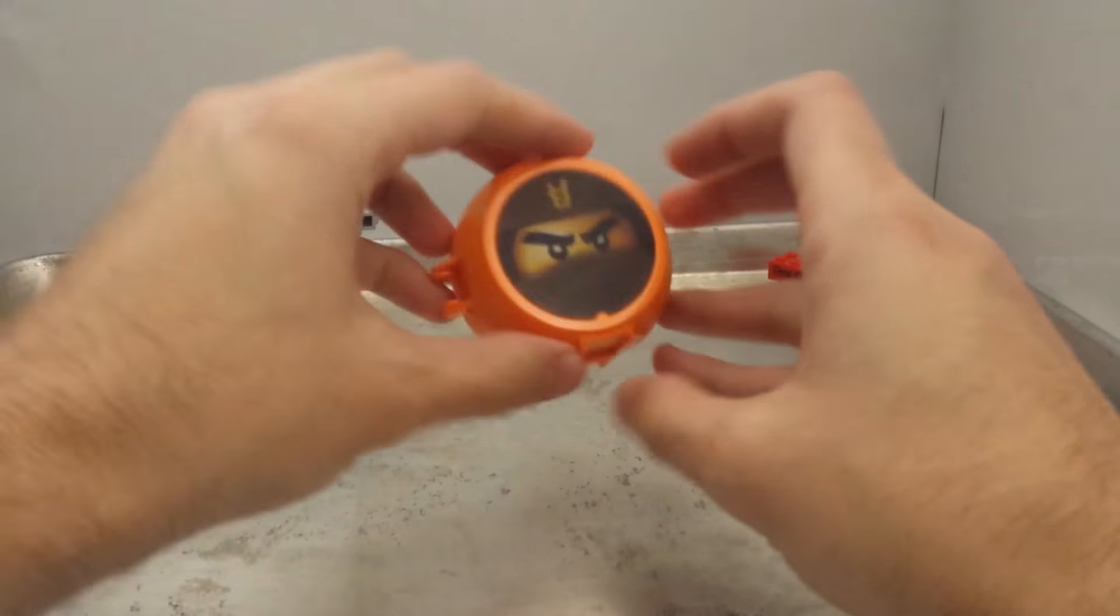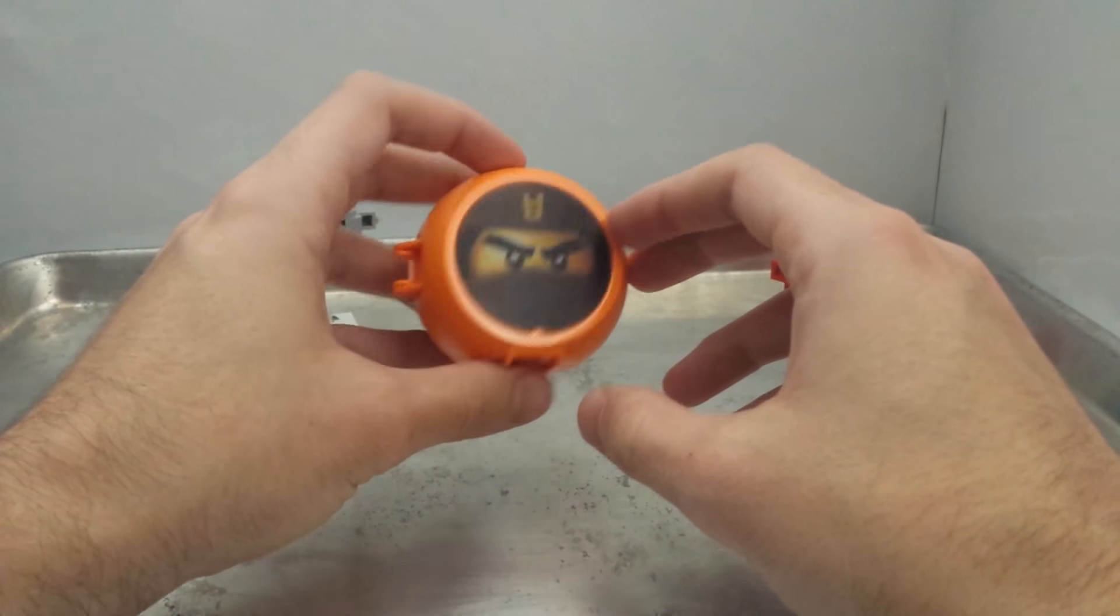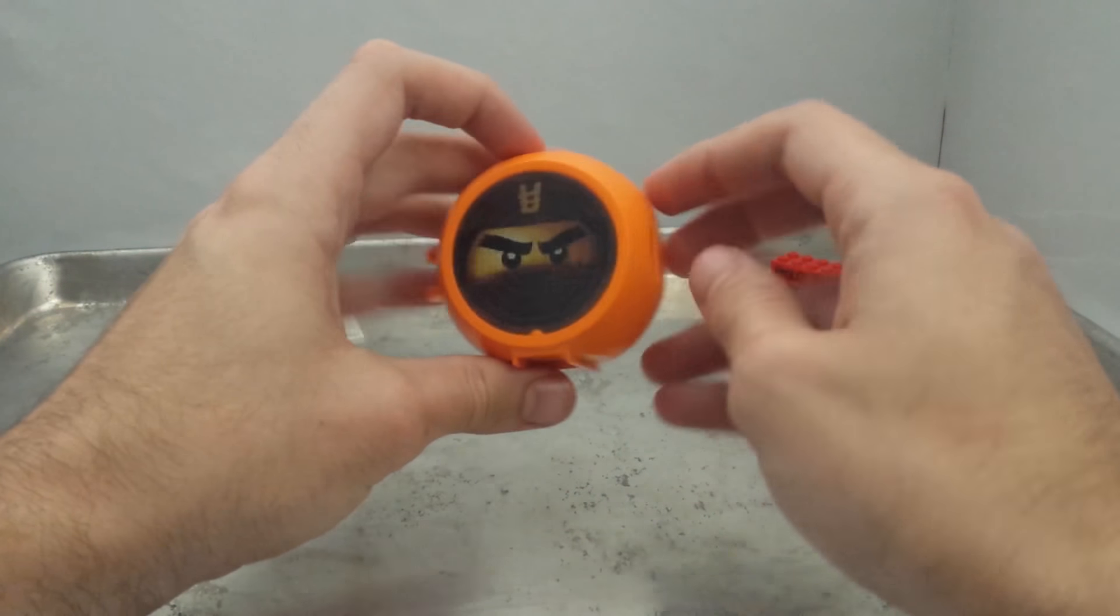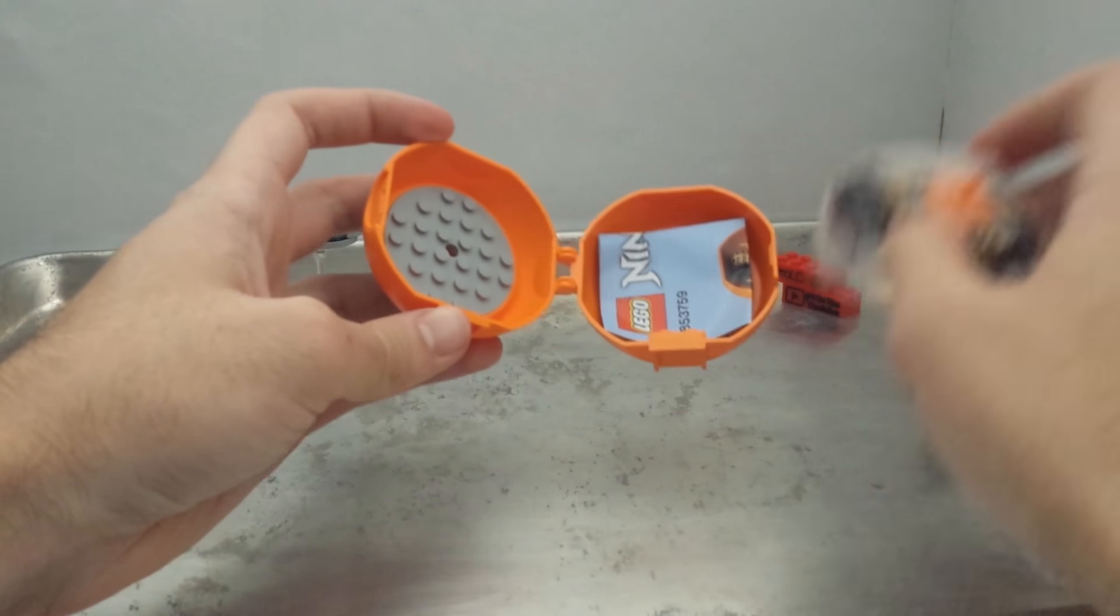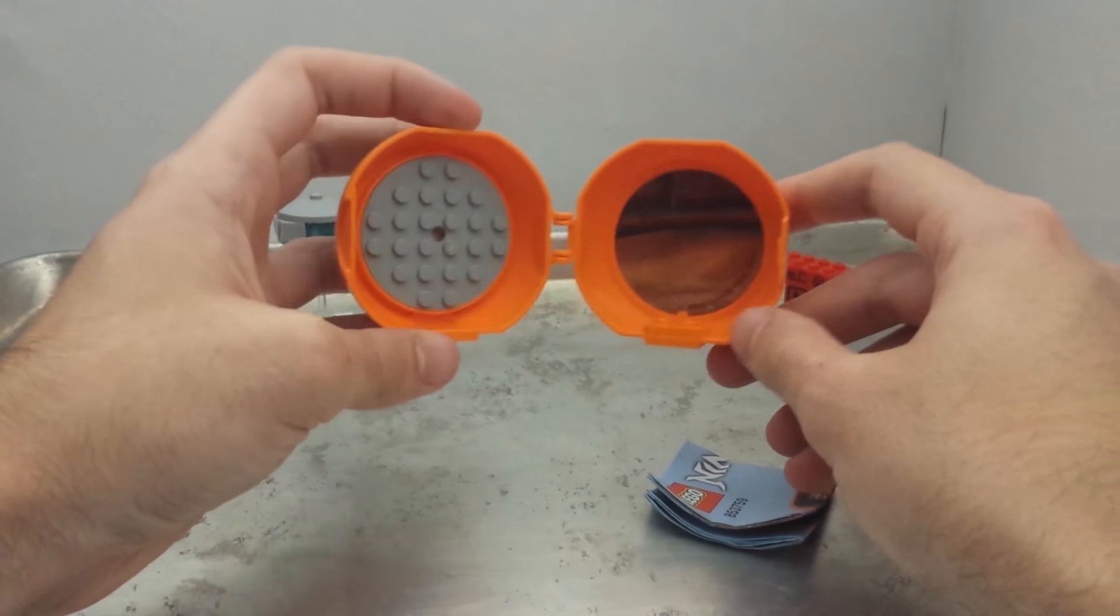Once you get inside the package, you get this cool orange battle pod. It has a hologram on the front that changes between Cole's face and Cole's elemental symbol. Inside the pod are Lego things. The inside is decorated with a sticker that is the same as the J-Pod.